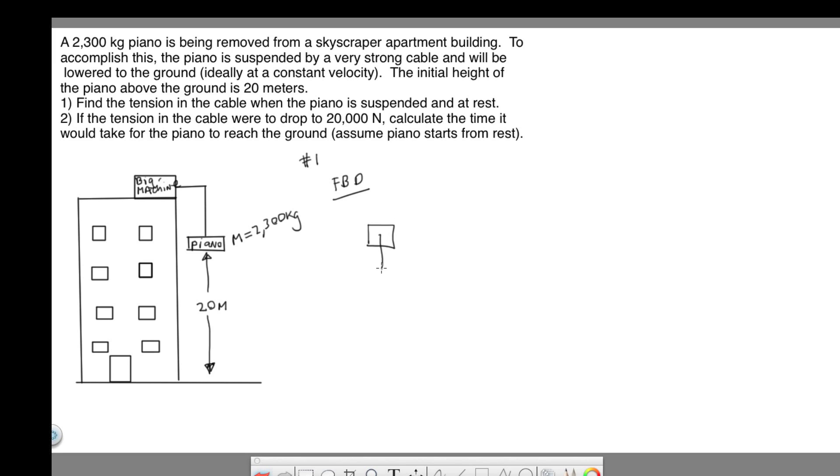There's only two forces acting. We have gravity down, which I label as mg. That's the equation for force of gravity, also known as the weight of the object. And then the other force is the tension in the cable, which points upward. The tension is holding the piano up.